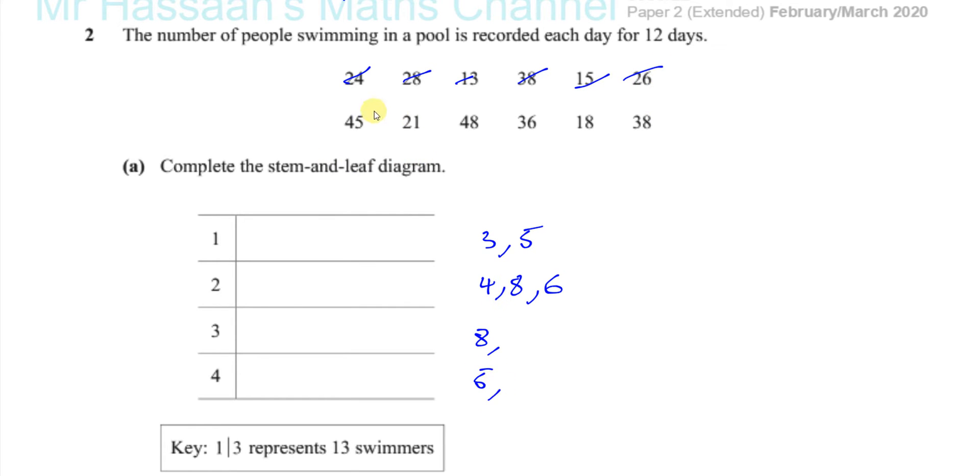21. 48. 36. 18. And 38. 38. Okay, so we have all the numbers in the right row.